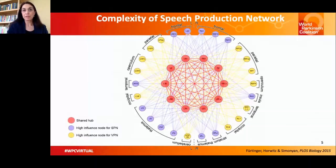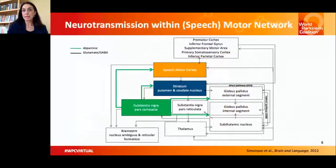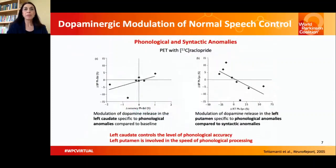In the context of Parkinson's disease, it is important to understand the dopaminergic modulation of speech networks, in addition to the topological organization of these large-scale networks, especially relevant to dopamine release to the striatum and speech motor cortex. Previous PET neuroreceptor mapping studies have shown modulation of dopamine release in the left caudate nucleus specific to phonological anomalies compared to baseline, suggesting that the left caudate nucleus controls the level of phonological accuracy.